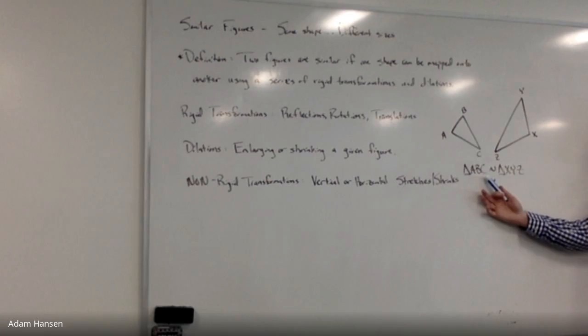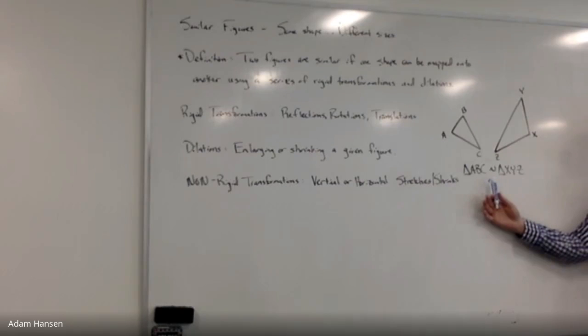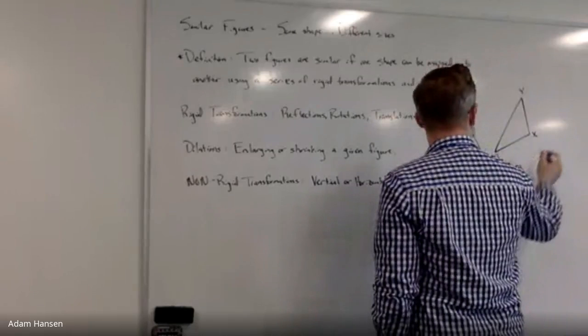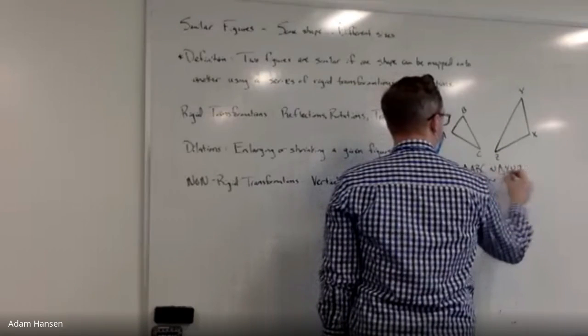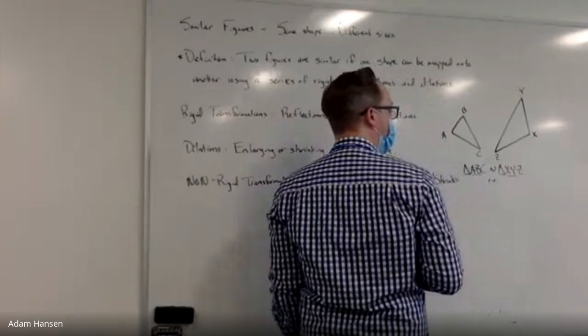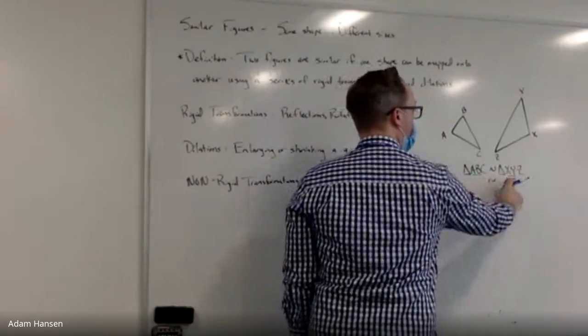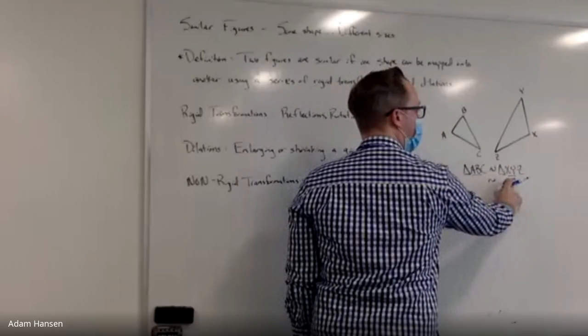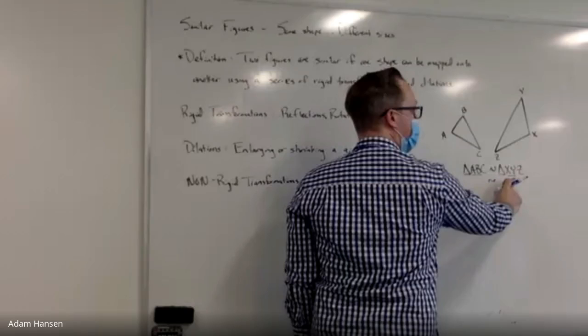Now when you list the vertices, you list the ABC and the XYZ, the order's important. This similarity statement tells me that A matches with X. Side AB matches with side XY. The first two letters in this statement should correspond to the first two letters of the second triangle.